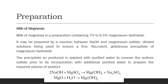A commonly used preparation is milk of magnesia, used in the treatment of acidity and constipation. It is a preparation containing 7% to 8.5% of magnesium hydroxide. It can be made by a reaction between sodium hydroxide and magnesium sulfate, using diluted solutions to ensure a fine, flocculent, gelatinous precipitate of magnesium hydroxide. The precipitate is washed with purified water to remove sodium sulfate before incorporation with additional purified water to prepare the required volume.